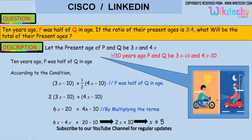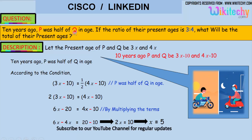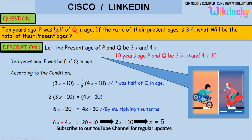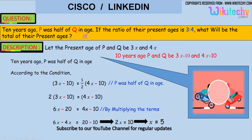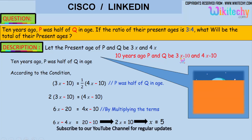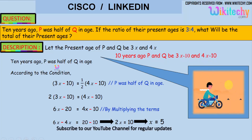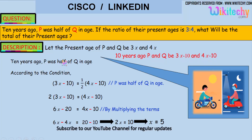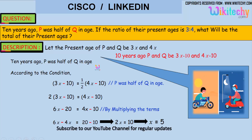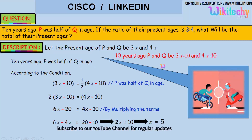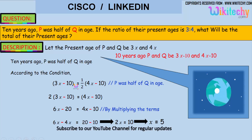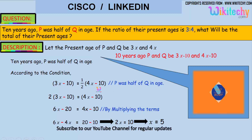10 years ago, P and Q's ages were 3x minus 10 and 4x minus 10. P was half of Q in age. So, 3x minus 10 is equal to half of 4x minus 10.